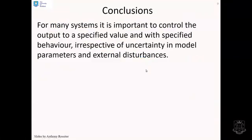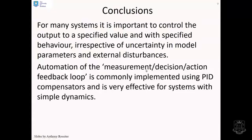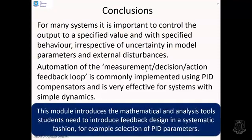So, the conclusions. For many systems, it's important to control the output to a specified value and with specified behaviour, irrespective of uncertainty in the model parameters and external disturbances. Automation of the measurement-decision-action feedback loop is commonly implemented using PID compensators. We've shown here with two simple examples that this is very effective for systems with simple dynamics - pretty much as good as a human in practice, but a lot more reliable because it works 24-7. This was an introductory video. The rest of the module will introduce the mathematical and analysis tools needed to look at feedback design more systematically, including how to choose these PID parameters.